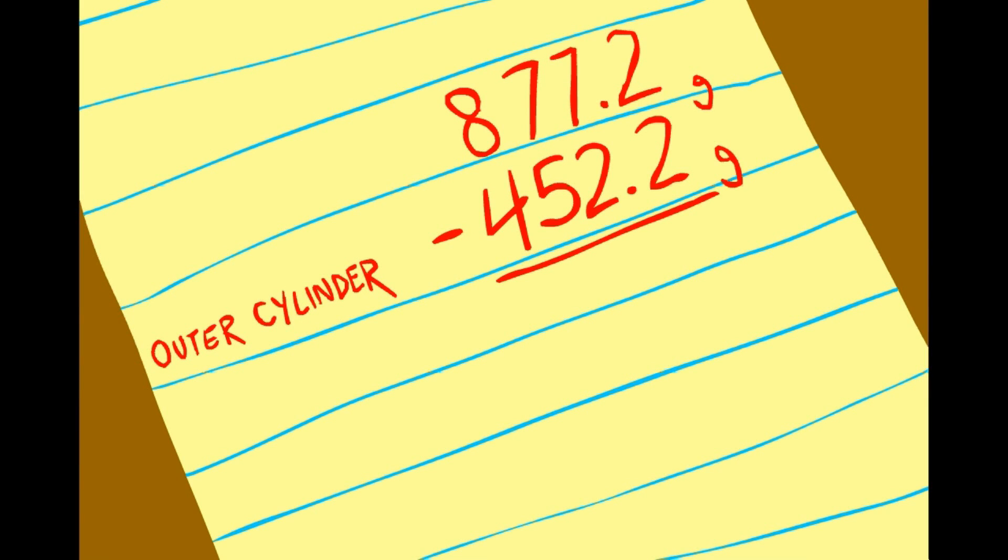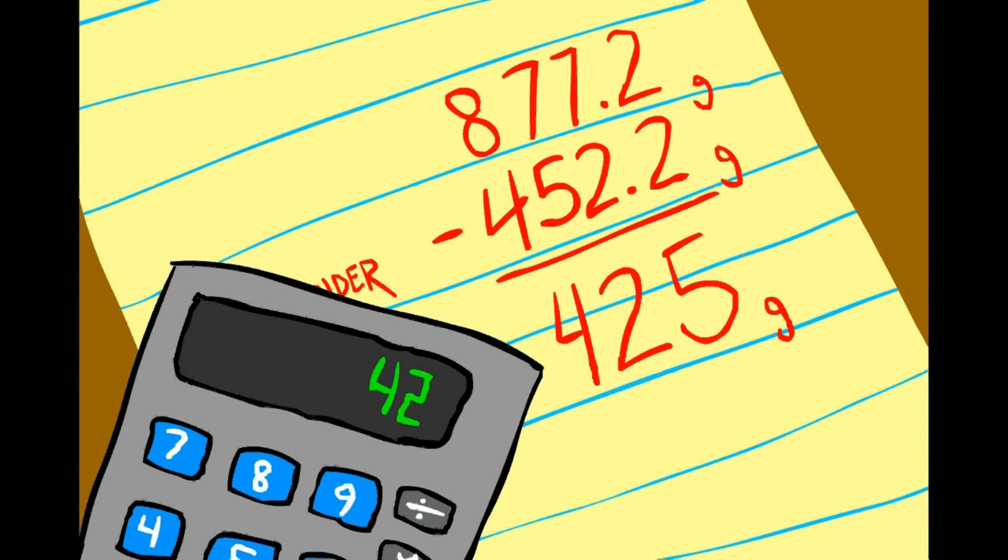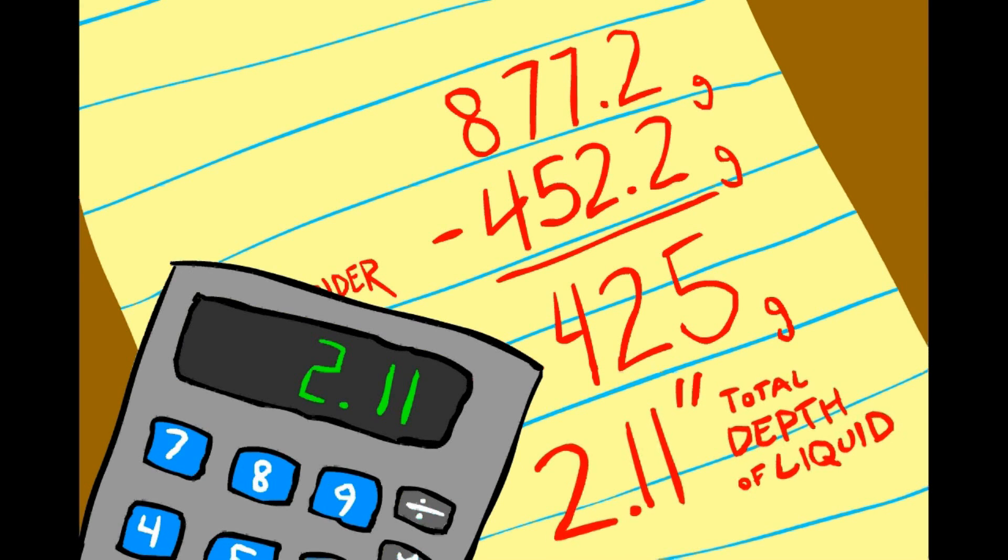Once you measure, remember to subtract the weight of your outer measuring cylinder and you are left with the weight of the liquid. All that is left is to divide the weight by 201 grams, the weight of an inch of water inside the outer cylinder, to find the depth of your measurement as liquid water.